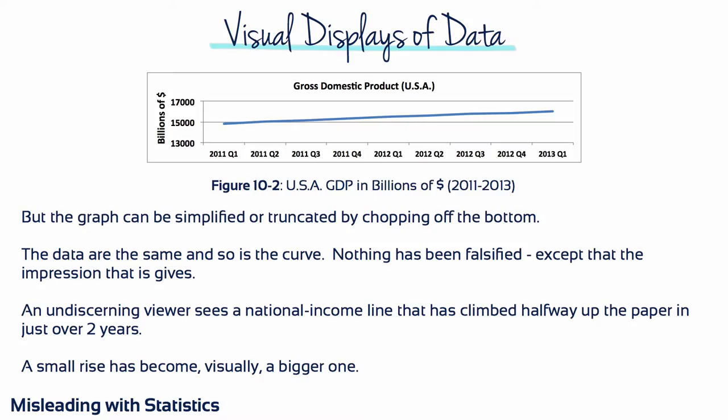But the graph can be simplified or truncated by chopping off the bottom. The data in Figure 10-2 are the same, and so is the curve. Nothing has been falsified, except the impression that it gives. An undiscerning viewer sees a national income line that has climbed halfway up the paper in just over two years. A small rise has become, visually, a bigger one.